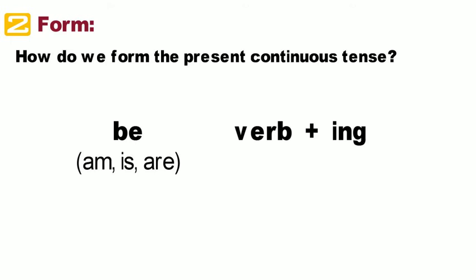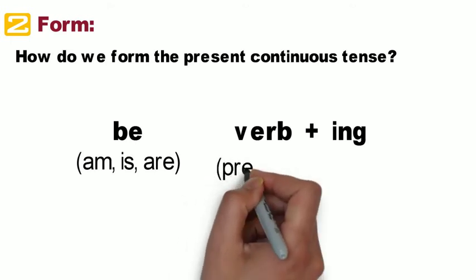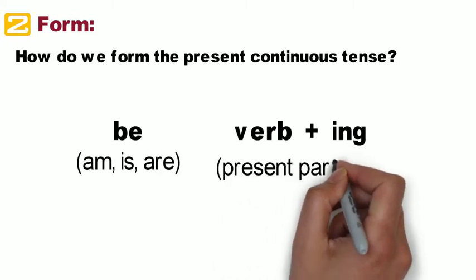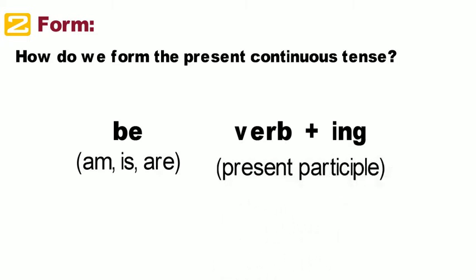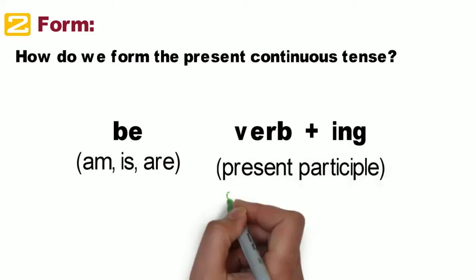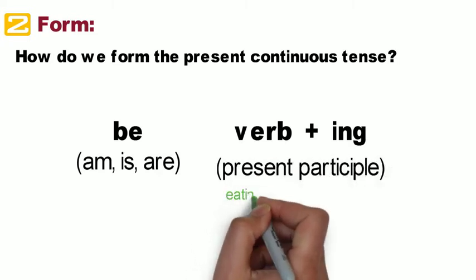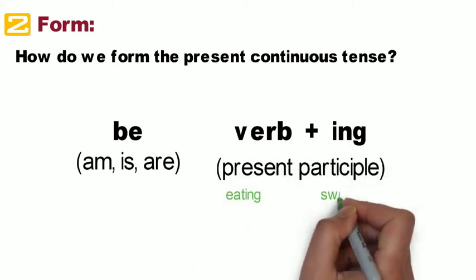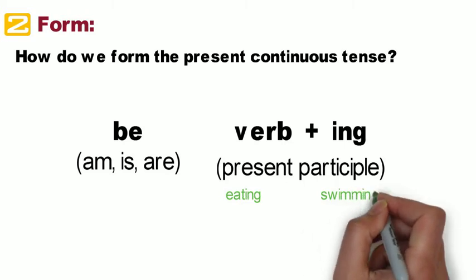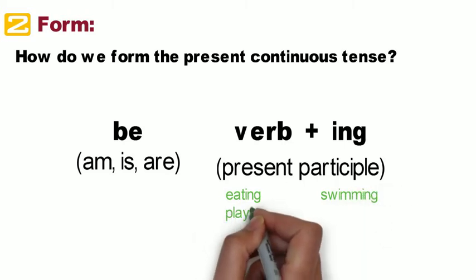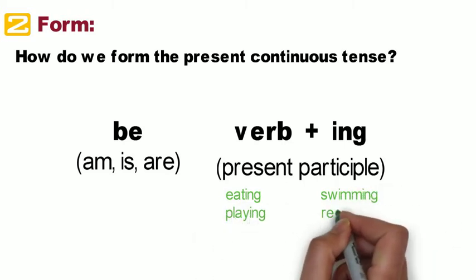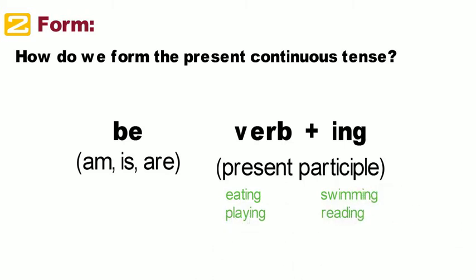The verb plus -ing is called the present participle. For example: eating, swimming, playing, and reading.